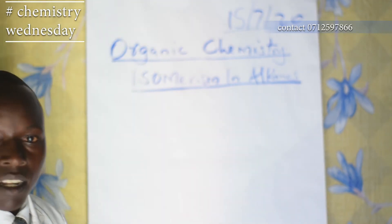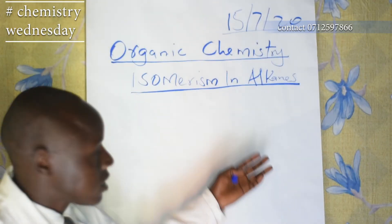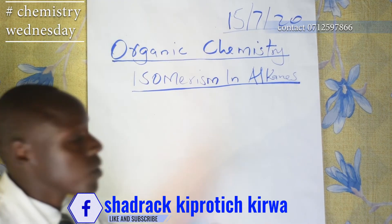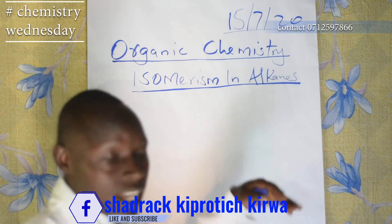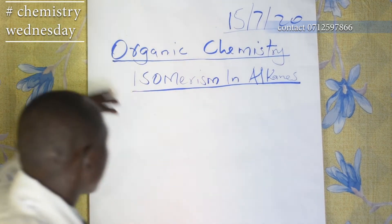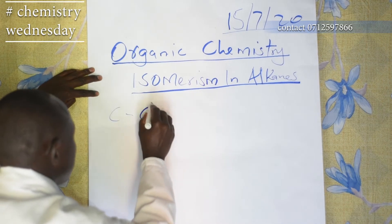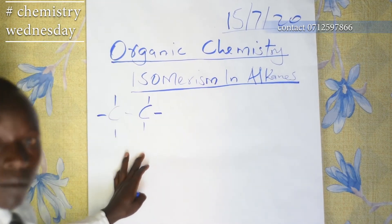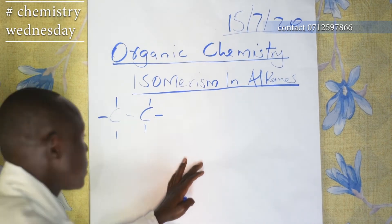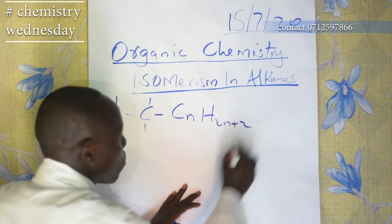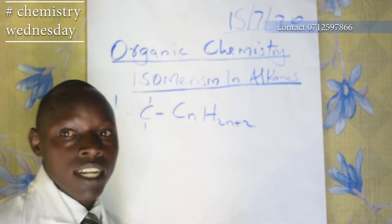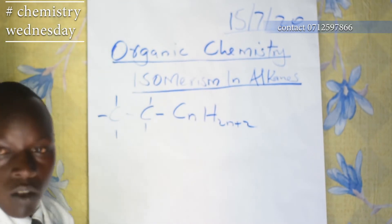Let us begin to remind ourselves of a few things that we said in our last lesson. Number one, we said alkanes belong to a group of compounds — this is hydrocarbon and it is a saturated hydrocarbon. The bonds in alkanes are all single bonds — that's why we are saying it is a saturated hydrocarbon. Number two, we said that alkanes have a general formula of CnH2n+2, where n represents the number of carbon atoms, starting from one.